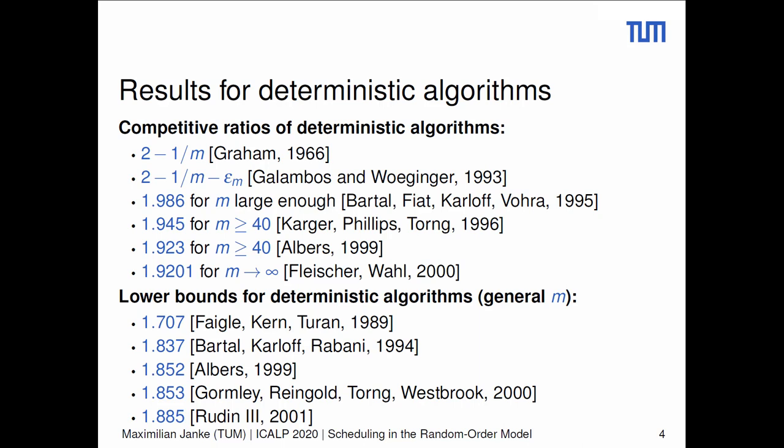Lower bounds follow a similar progression. The first non-trivial one, due to Feigl et al., is 1 plus square root of 2 divided by 2, about 1.707. The currently best lower bound is due to Woodin III, who in his PhD thesis showed that no deterministic online algorithm can be better than 1.885-competitive on a general number of machines. As you see, this famous old problem has a small but distinct gap left to be filled — interesting, but probably quite a hard problem, since no progress has been made during the last 20 years.